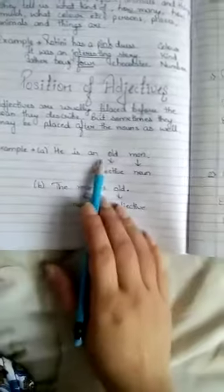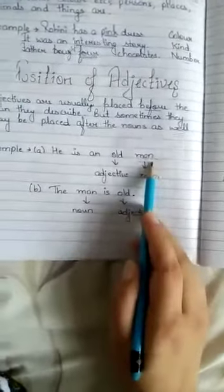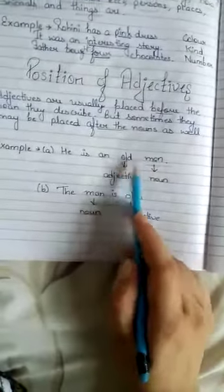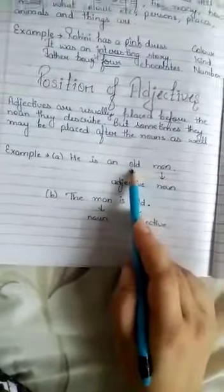For example, 'He is an old man.' Man is what? A noun. So the adjective is what? Old. It is placed before the noun. This adjective word is placed before the noun.